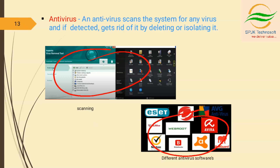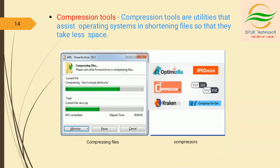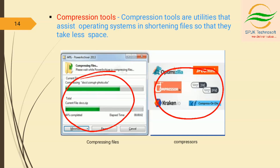The next utility is compression. Compression tools are utilities that assist operating systems in shortening files so that they take less space. We can reduce the size by compressing the files. It is a process that shrinks files so that less disk space is occupied. Files that are bigger in size need to be compressed while sending as an email attachment. These are compressor softwares used to compress data or reduce file size.